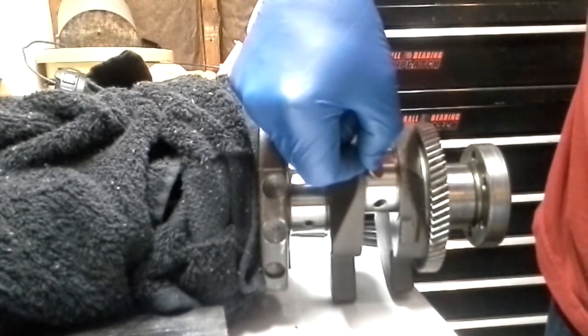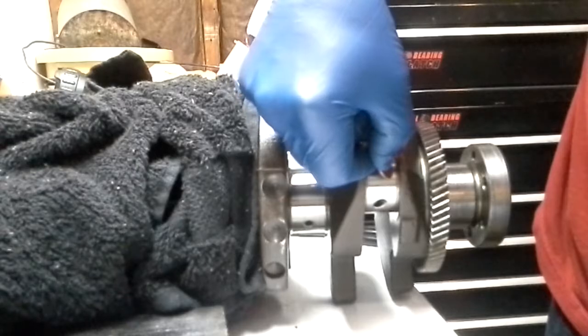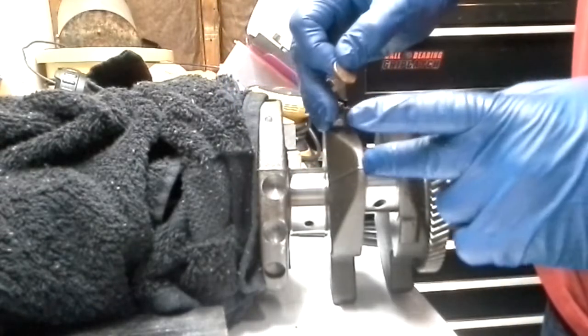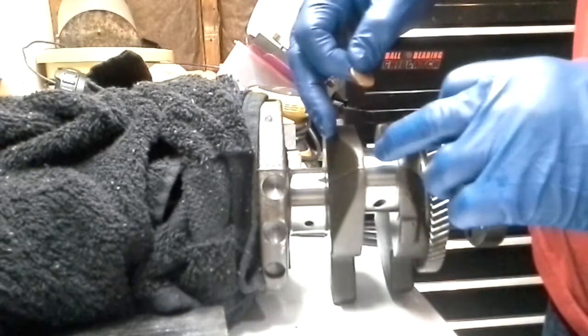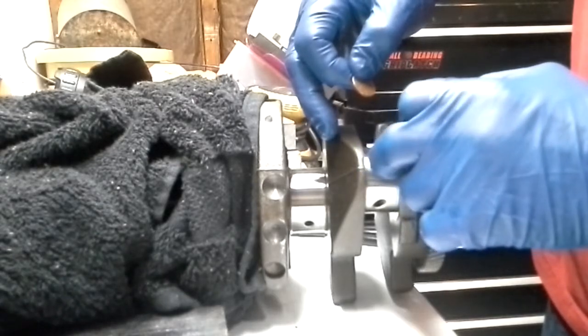If there's any grooves or imperfections, it really is amplified through the edge of the penny. If you take your finger, even without the glove on, or your fingernail, you might not be able to feel some of the imperfections on the journal.